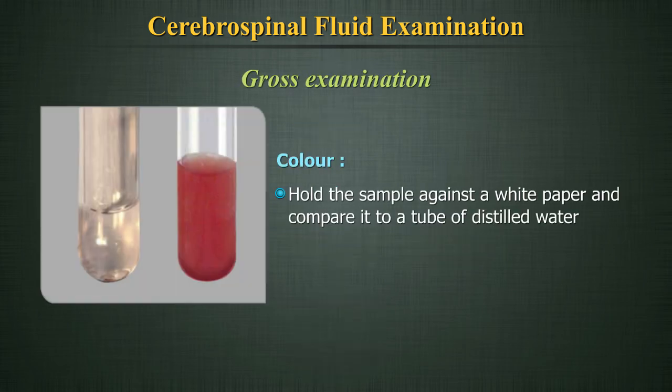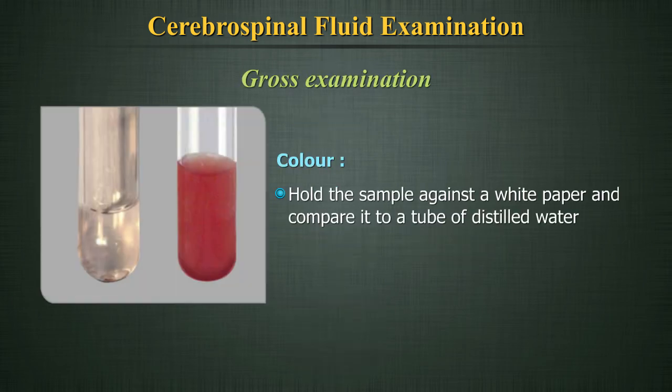Gross examination — Colour: Hold the sample against a white paper and compare it to a tube of distilled water. If it has any colour at all, it is abnormal. The cause can be the presence of blood, either due to a pathology or due to trauma during the procedure.